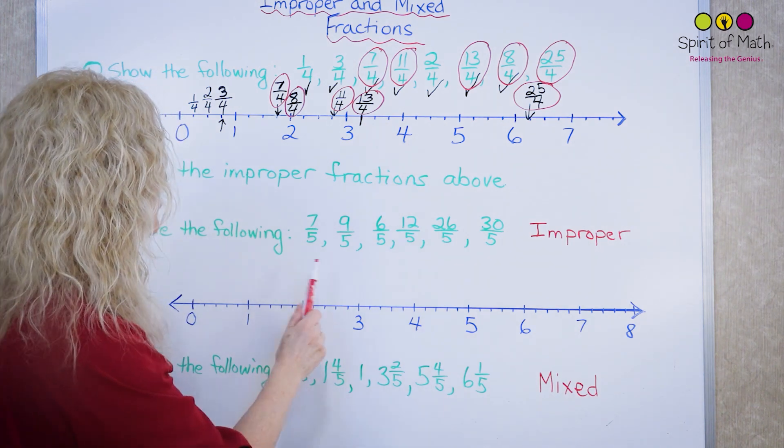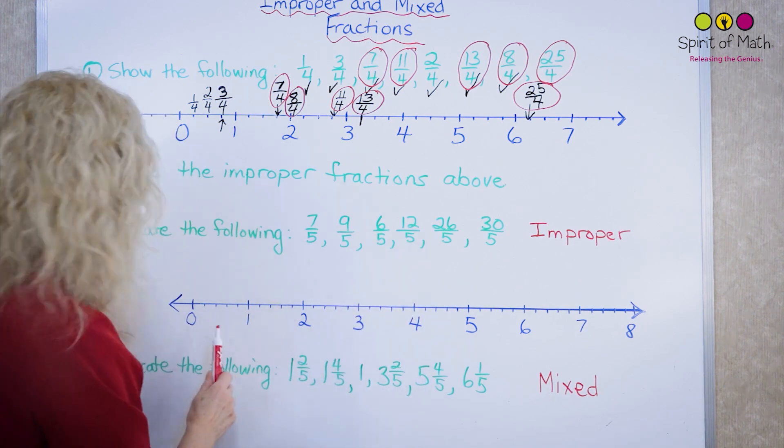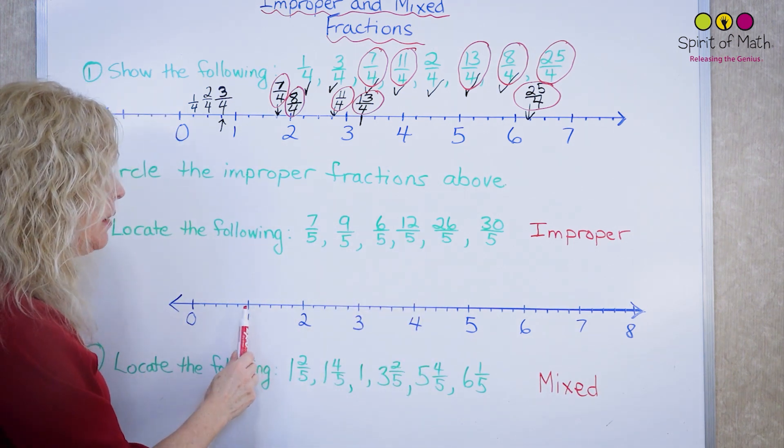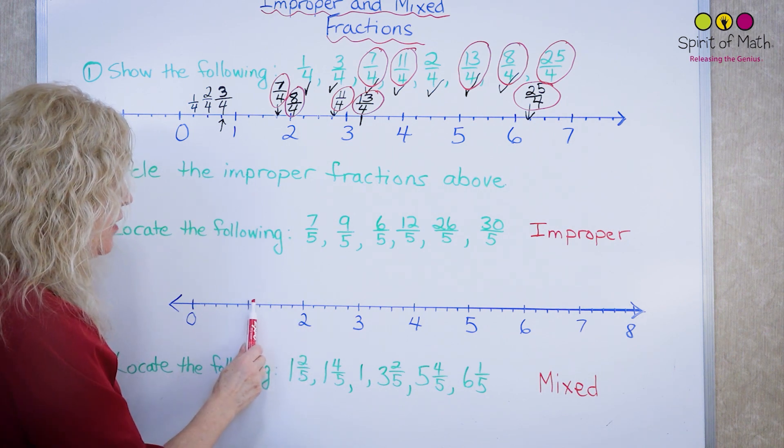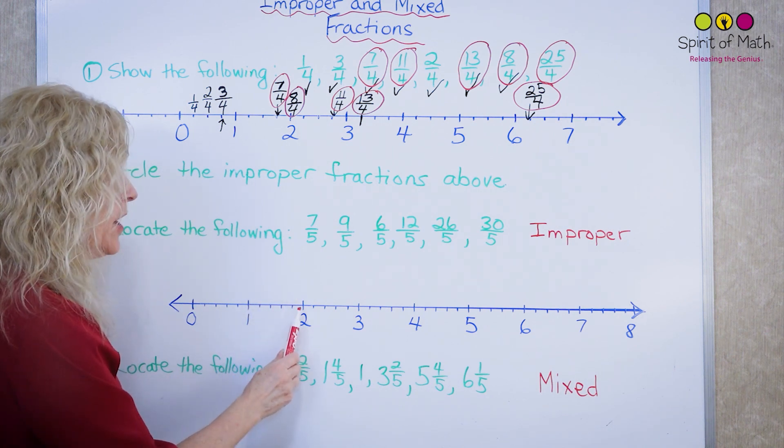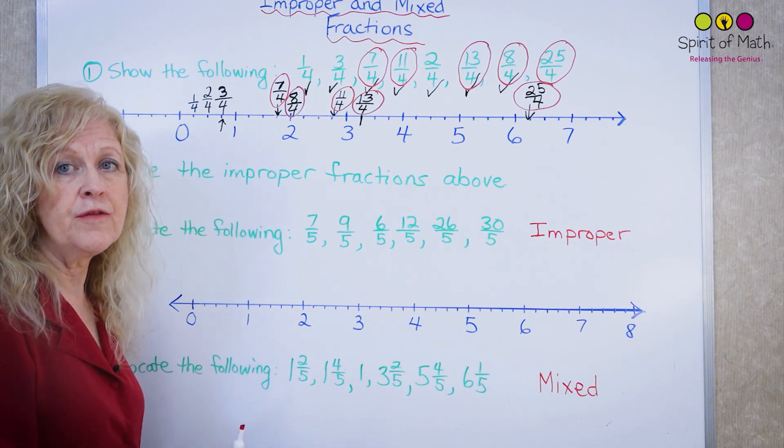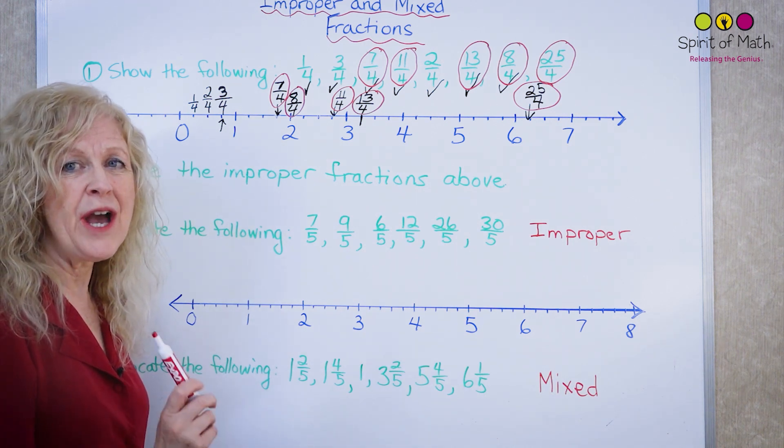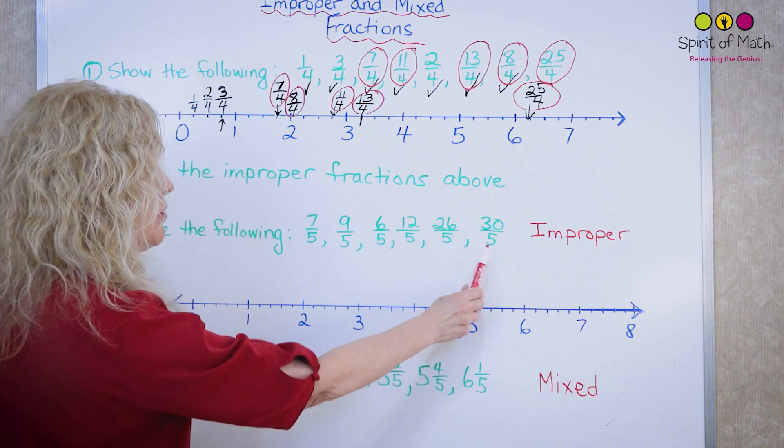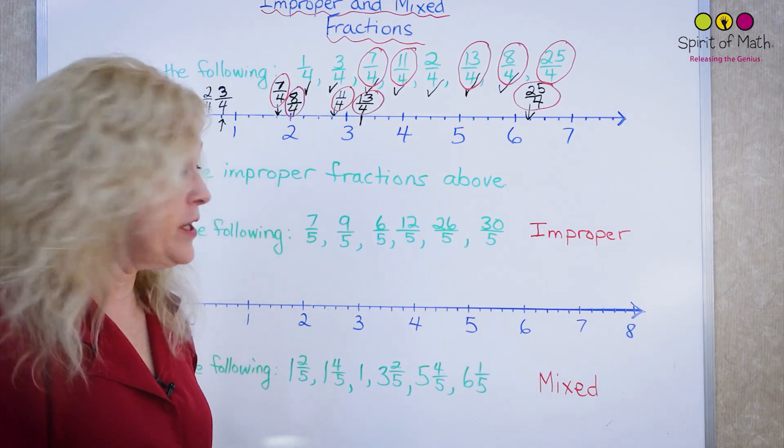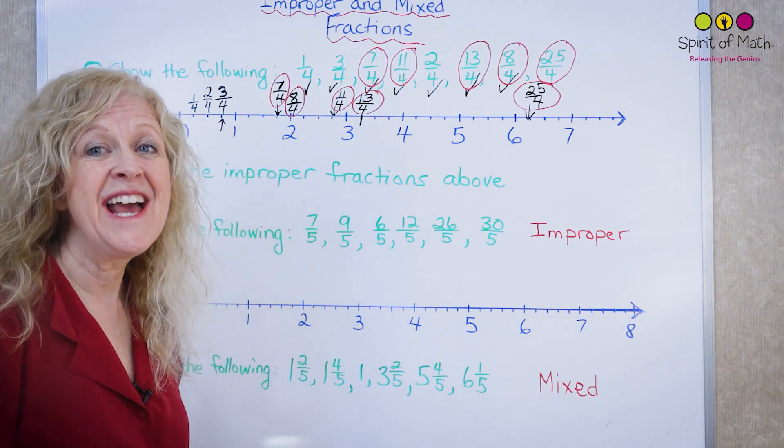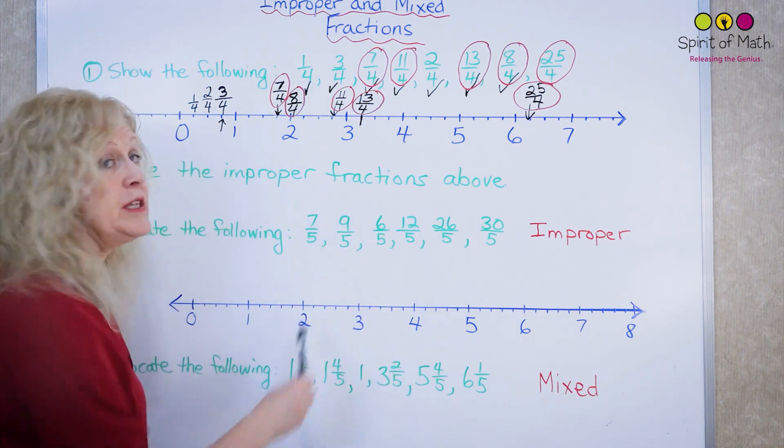So let's do another example. This time, we're going to do, this scale is in fifths. If you see from the one to the two, you have one, two, three, four, five. Five different intervals, which means that you have it in fifths and all of these are in fifths. So I'm going to quickly go through this and you're going to work with me again, and see if you can find all of these points.